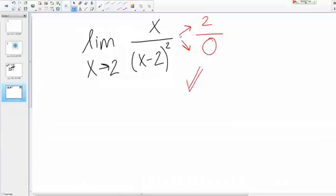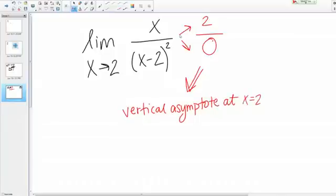Now from what we just learned, we know that if we get the form of a number over 0, it tells us that we're at a vertical asymptote. So now I know that there's a vertical asymptote at X equals 2, because when I plugged in 2 to the function, I got a number over 0.